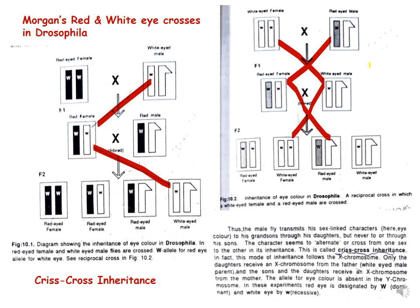This kind of inheritance pattern is called criss-cross inheritance, where a trait goes from one sex to the opposite sex in the next generation and comes back to the original sex in the generation after.